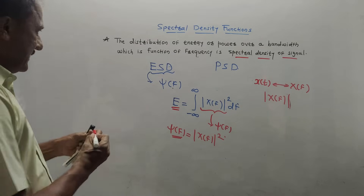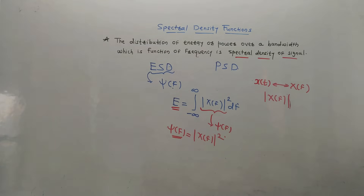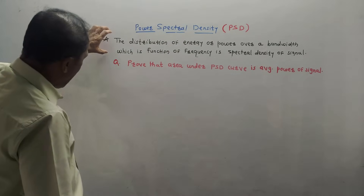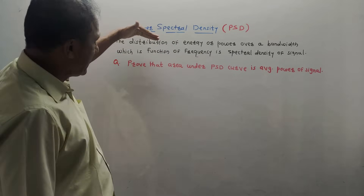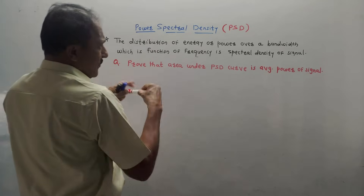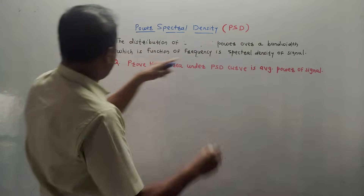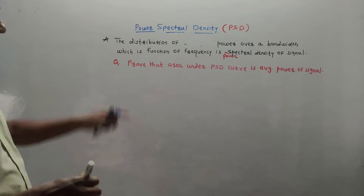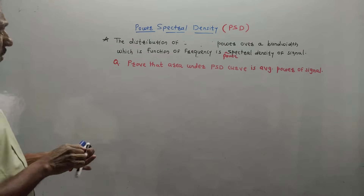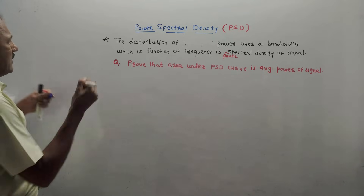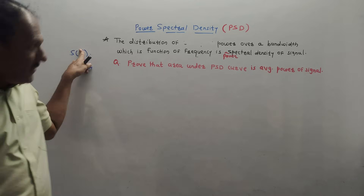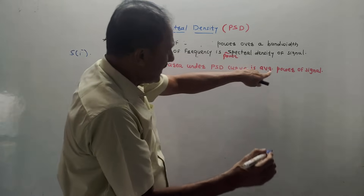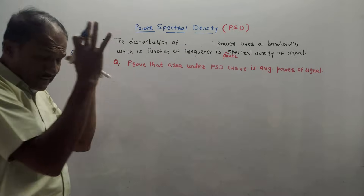Now let us talk about Power Spectral Density. The definition of PSD: the distribution of power over a bandwidth, which is a function of frequency, is known as Power Spectral Density. The only change from the spectral density definition is replacing 'energy' with 'power.' PSD is denoted by the notation S(f). Another expected question is: prove that the area under the PSD curve is the average power of the signal.